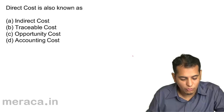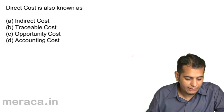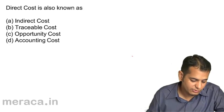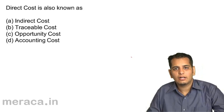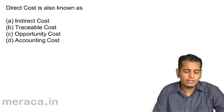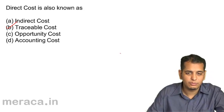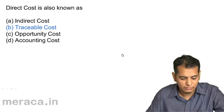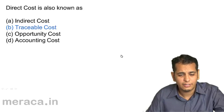Direct cost is also known as: (a) indirect cost, (b) traceable cost, (c) opportunity cost, (d) accounting cost. This is very easy. Direct cost is also known as traceable cost. Let's see, that's the correct answer.